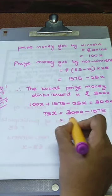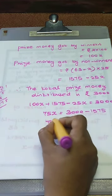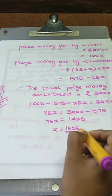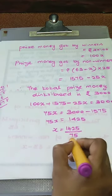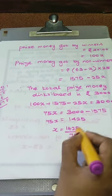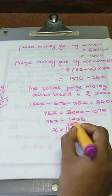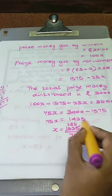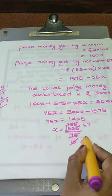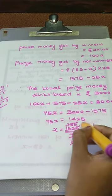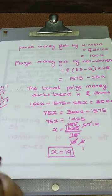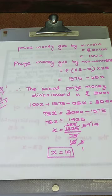Subtracting gives 1425. So 75x equals 1425, and x equals 1425 by 75. Cancelling with 5: 1425 by 75 simplifies. Then cancelling with 3: the x value is 19. So the number of winners is 19.